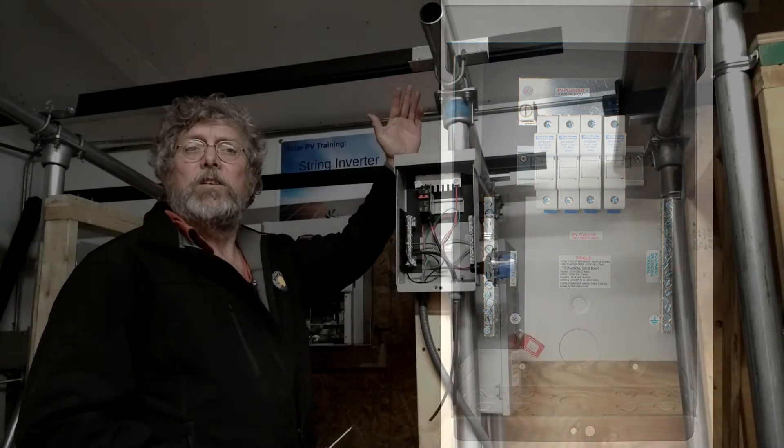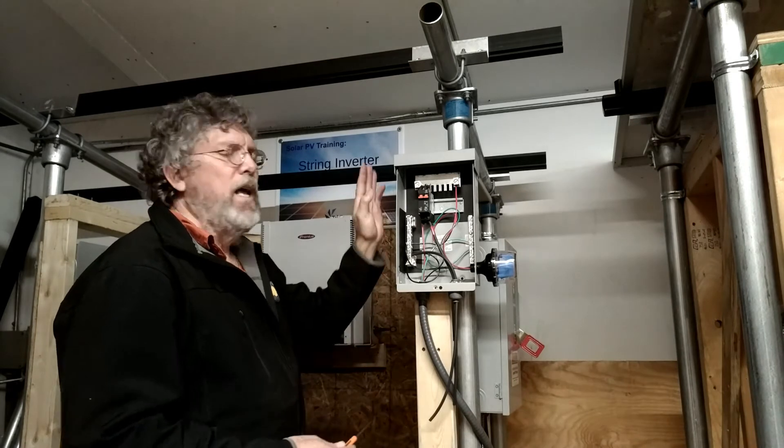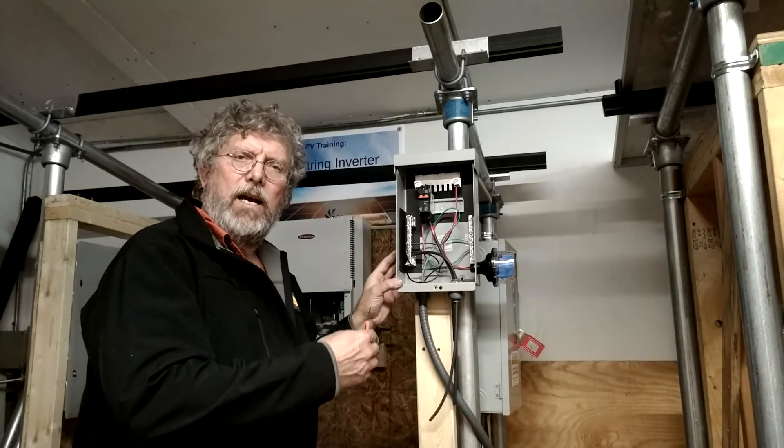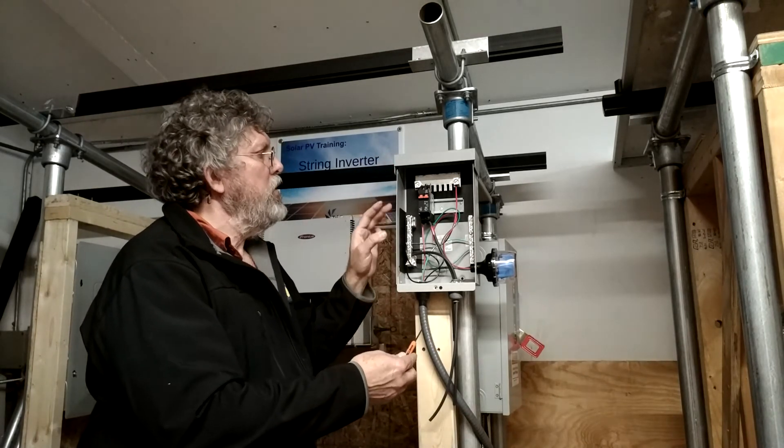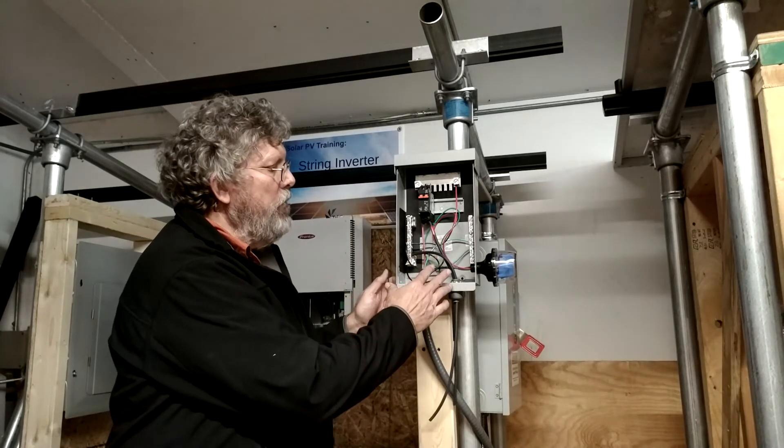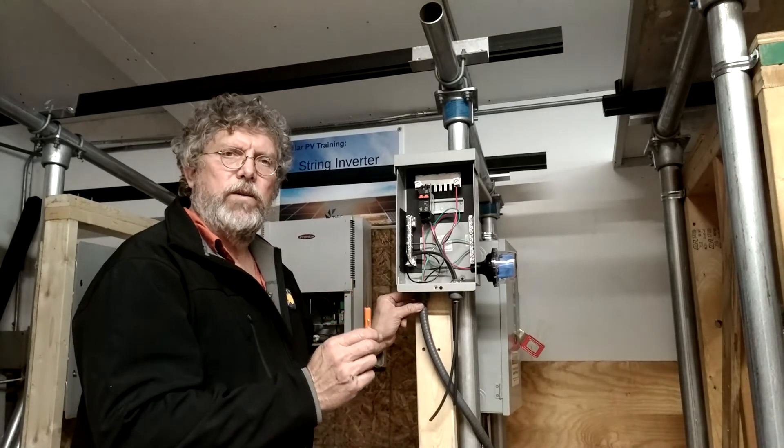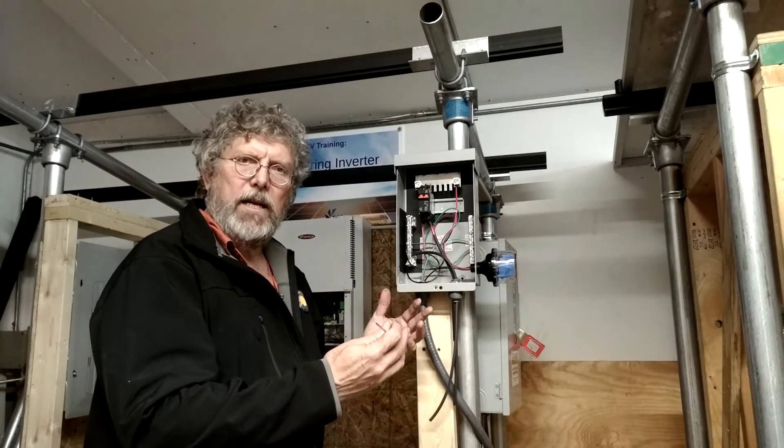Now the PV source circuit which comes from the array to the combiner box allows us in a traditional system to combine multiple strings and then lead from the combiner box to the DC disconnect with a single string. That just helps with wire management and the like.